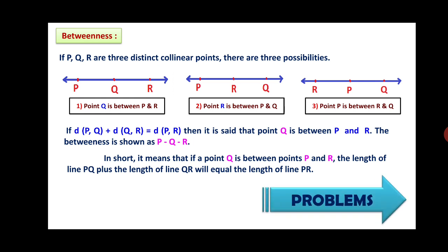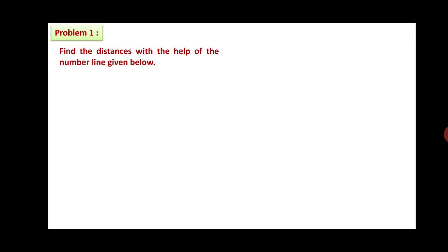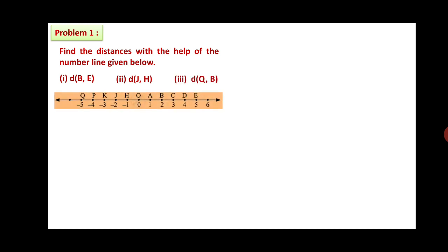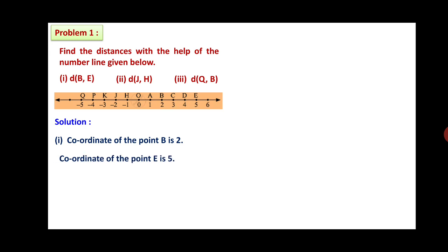Now let us see different problems based on what we have discussed. Problem number 1: find the distance with the help of the number line given below. First: distance between point B and E. The coordinate of point B is 2 and the coordinate of point E is 5. Since 5 is greater than 2, distance between B and E equals 5 minus 2. Therefore, distance between B and E is equal to 3.